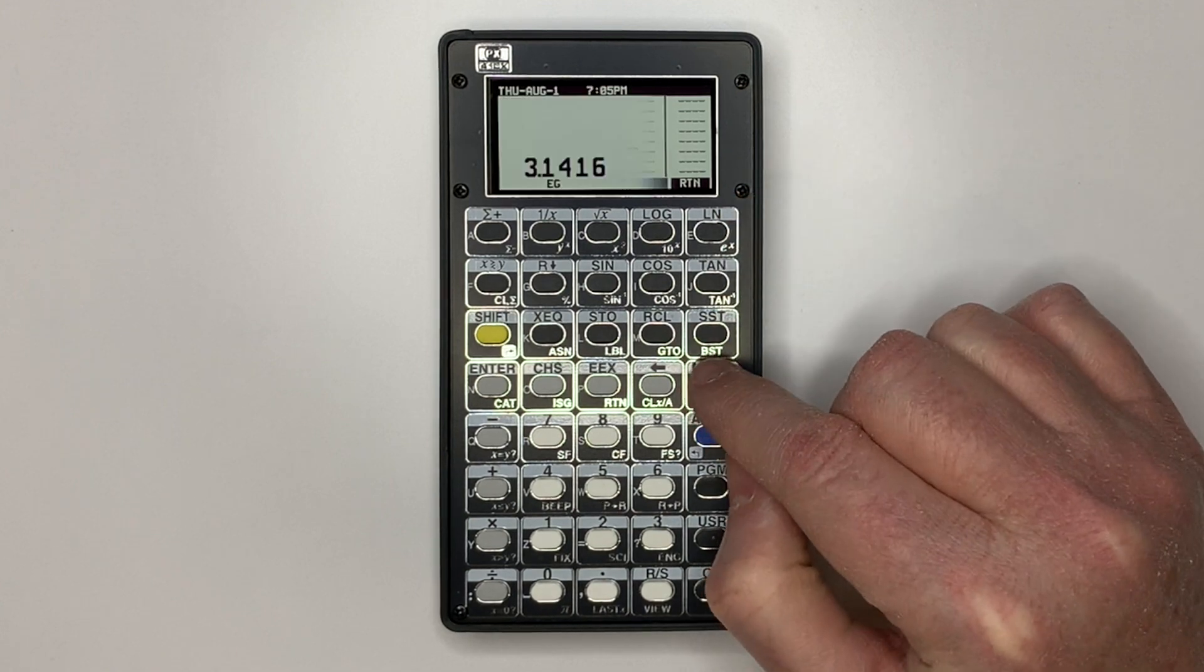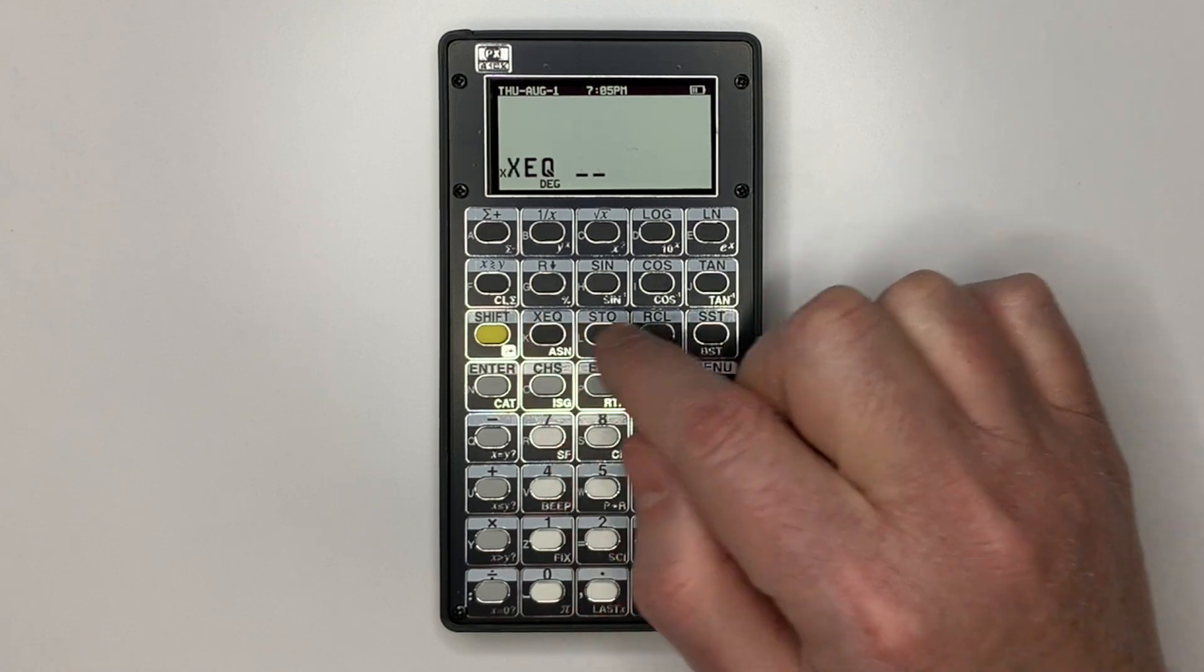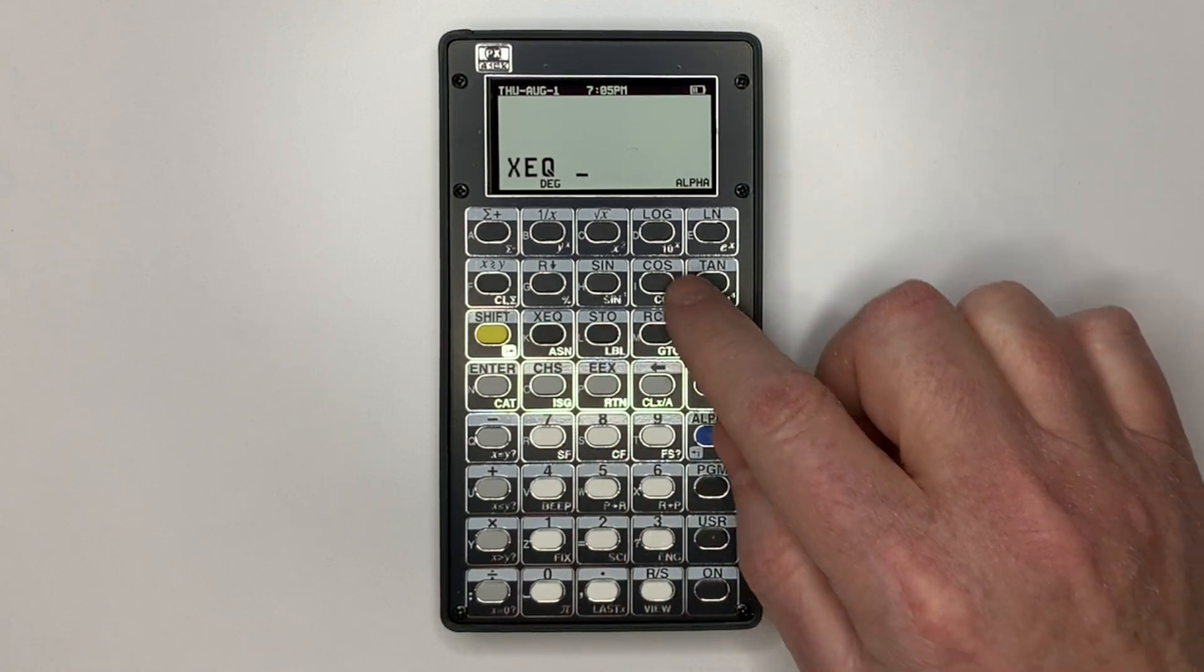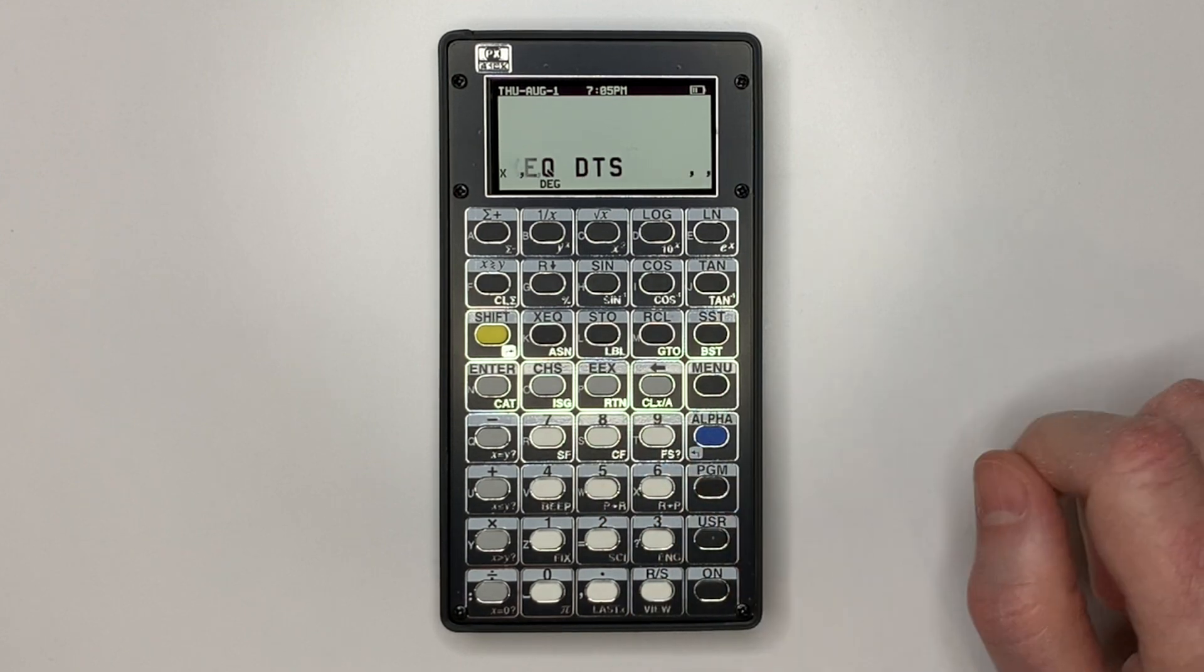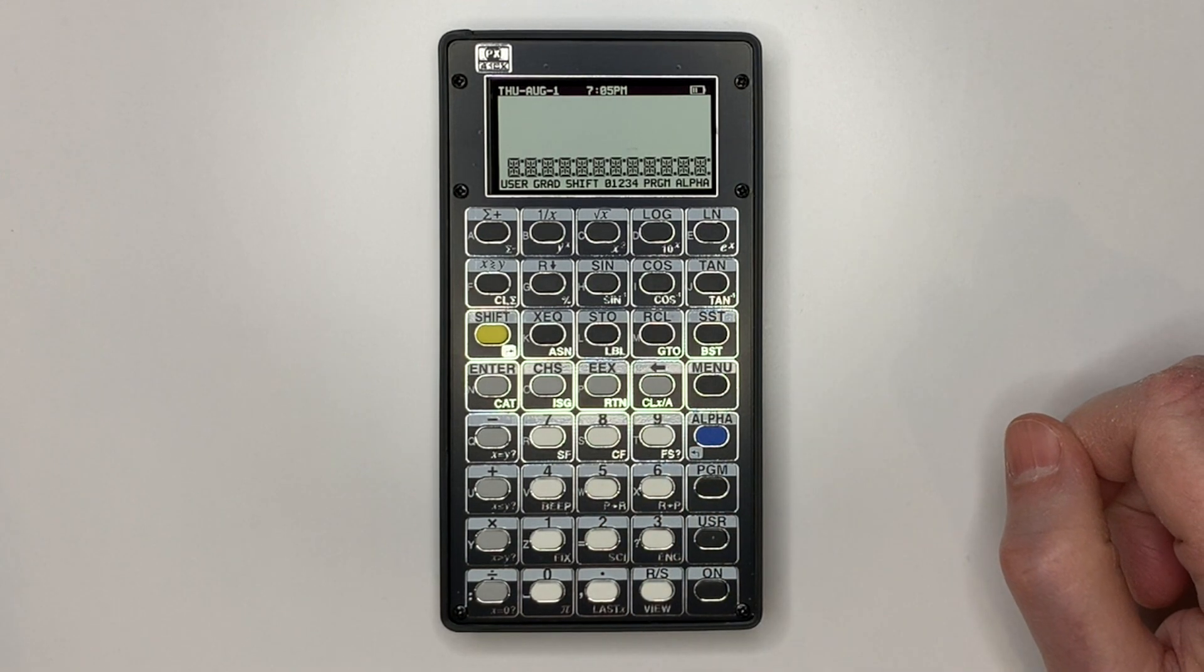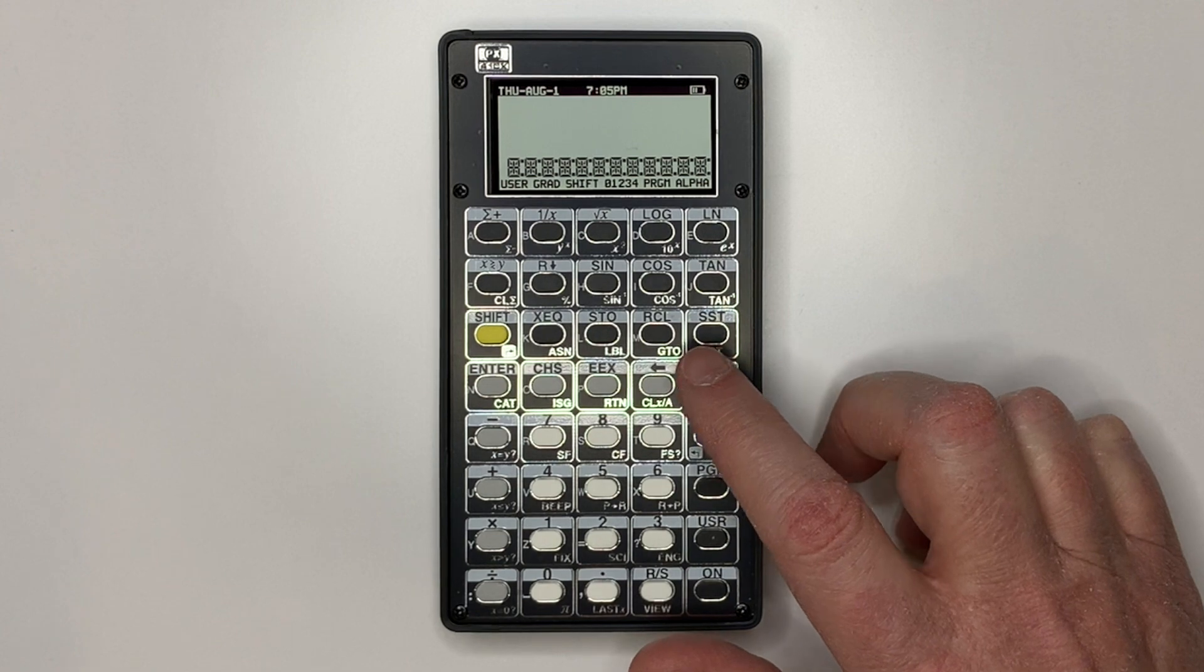Exiting the menu, we can demonstrate some ROM features. Display test is from the AMC OSX module. You can see that it lights up the whole display just like the original 41C.